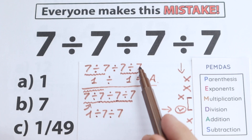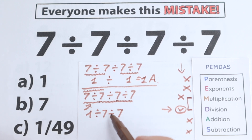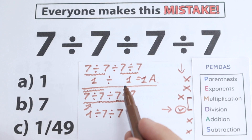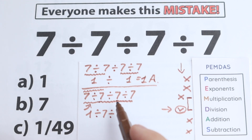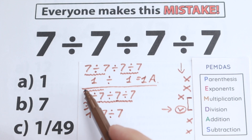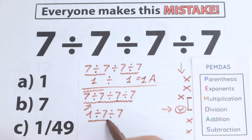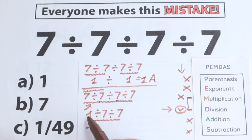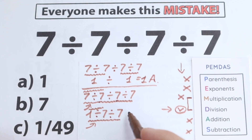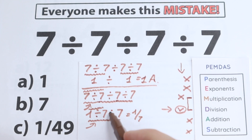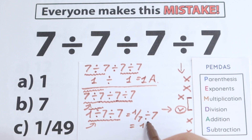This is the really interesting and tricky moment. Previously, the incorrect approach divided 7 divided by 7 on the right-hand side — but according to PEMDAS that's wrong. We can't skip ahead. The next first sign from left to right is now this division, so 1 divided by 7 gives us 1/7. Then dividing by 7 again gives our final answer: 1 over 49. This is option C.